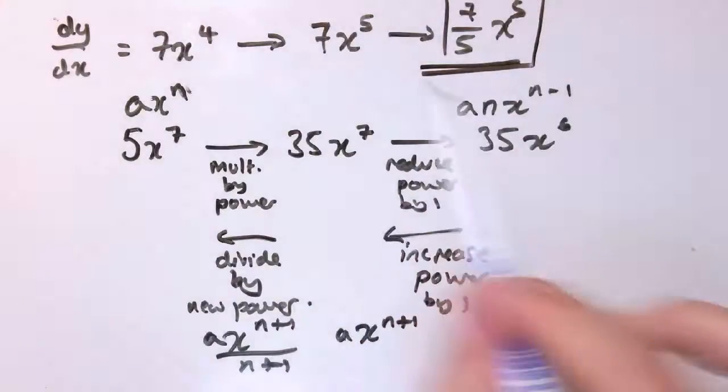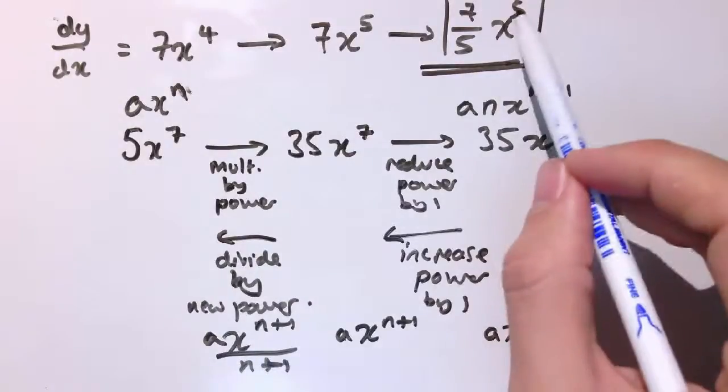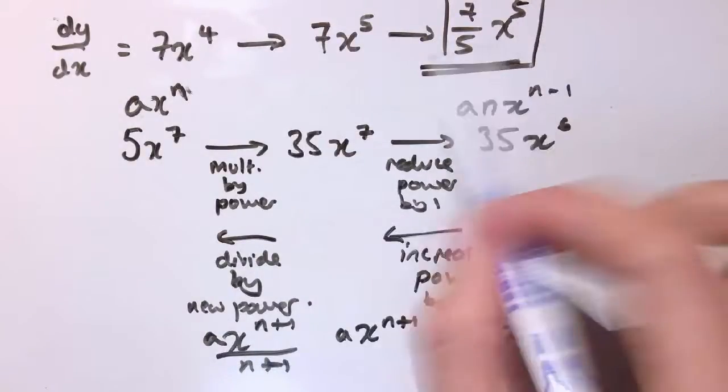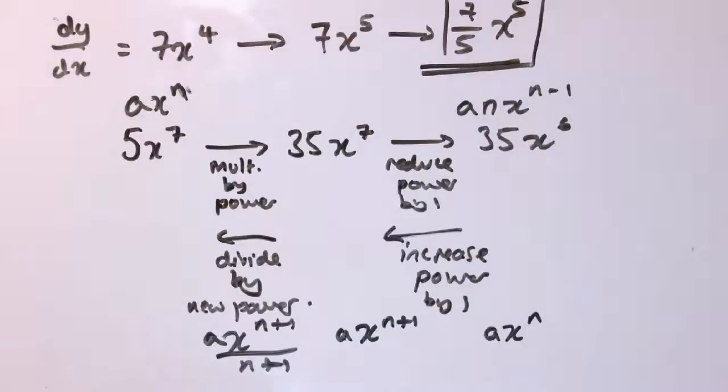This notation, by the way, we're not going to use beyond these introductory examples, it's not a good notation to use this, but it's given us the answer here, 7/5 x⁵. So, if I were to differentiate this, I would multiply by 5, and reduce the power by 1, and that would give me 7x⁴, so it's worked.